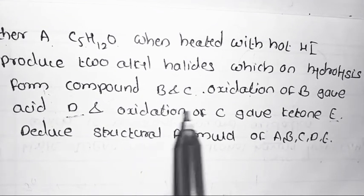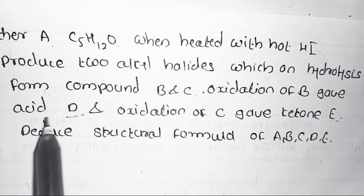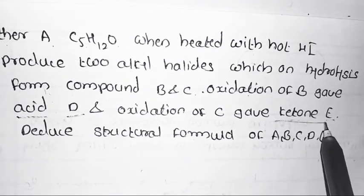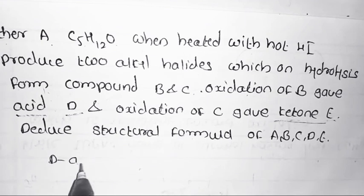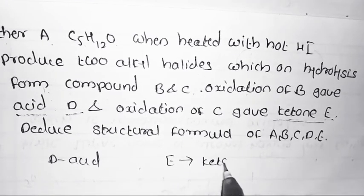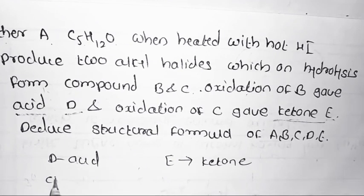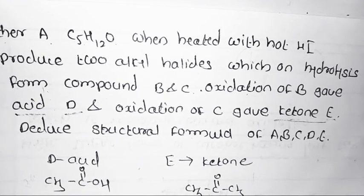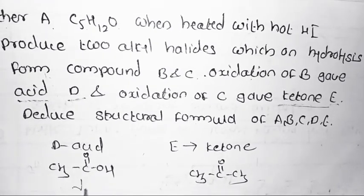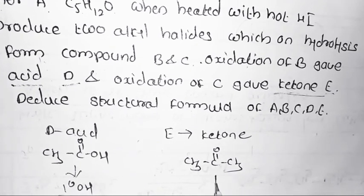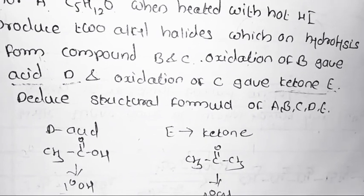Here formation of D is an acid and formation of E is a ketone. The structural formula of acid is CH3C(=O)OH and the ketone is CH3COCH3. This acid is prepared from primary alcohols and this ketone is prepared from secondary alcohols.